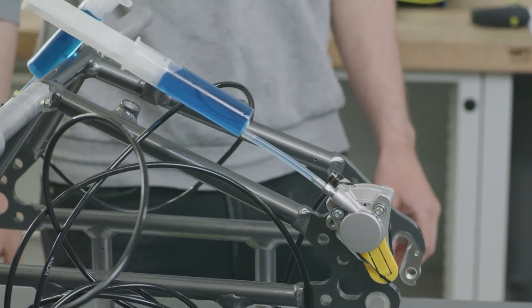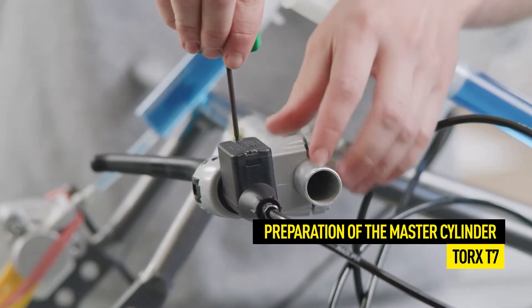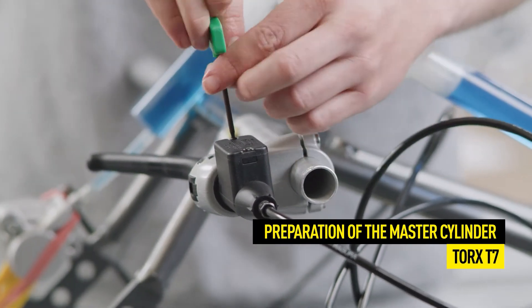Next, remove the two screws on the expansion reservoir so that you can open it. Align the brake master horizontally.